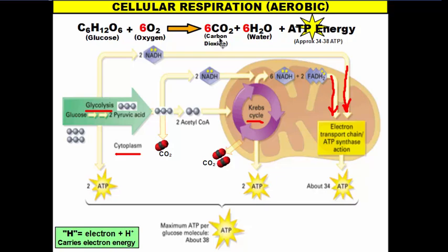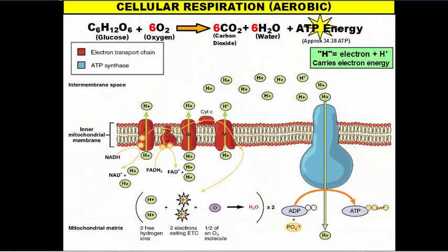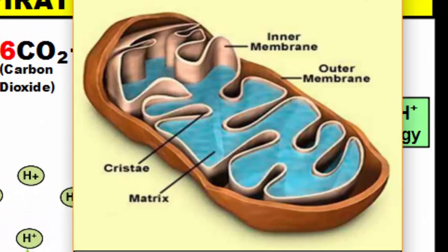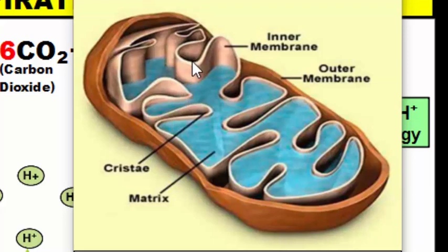Now let's talk about what happens in the electron transport chain. To understand how this chain works, we need to look at the basic anatomy of a mitochondria. We have the outer membrane — the outer shell of the mitochondria itself. On the inside, we have another membrane, cleverly called the inner membrane, which gives the mitochondria its folded appearance on the inside.